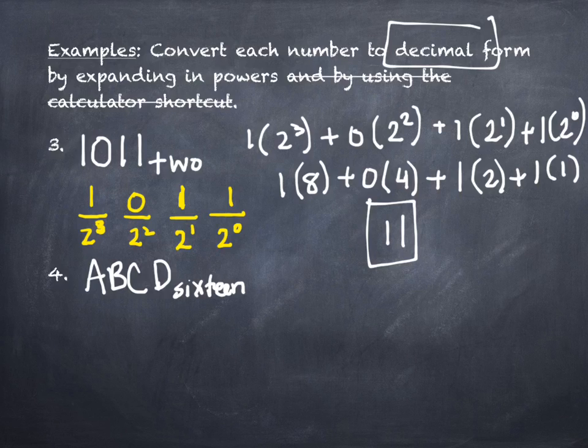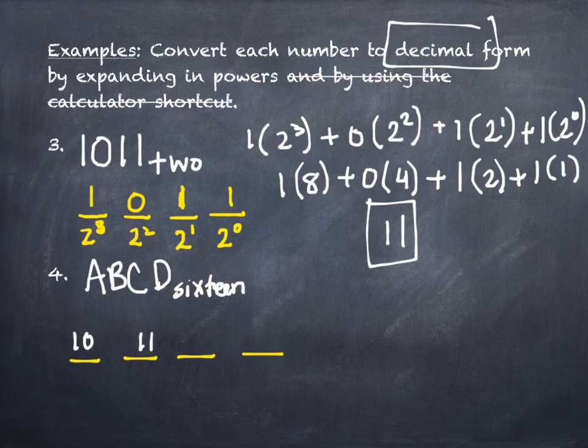The next example looks funny — I don't even see any numbers, just letters. But we know they represent numbers. This is a four-digit hexadecimal number: ABCD. What I want to write in each position is the actual numeric value. A is 10, B is 11, C is 12, and D is 13. So we write 10, 11, 12, 13 across the four positions.